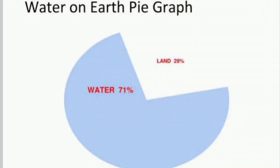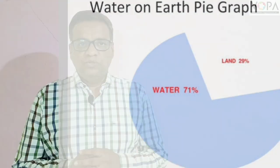Hello students, we are going to discuss here about Aquatic Ecosystems. 71% of the Earth is covered in water and 29% is covered in land. So it is most important to study about the Aquatic Ecosystem.